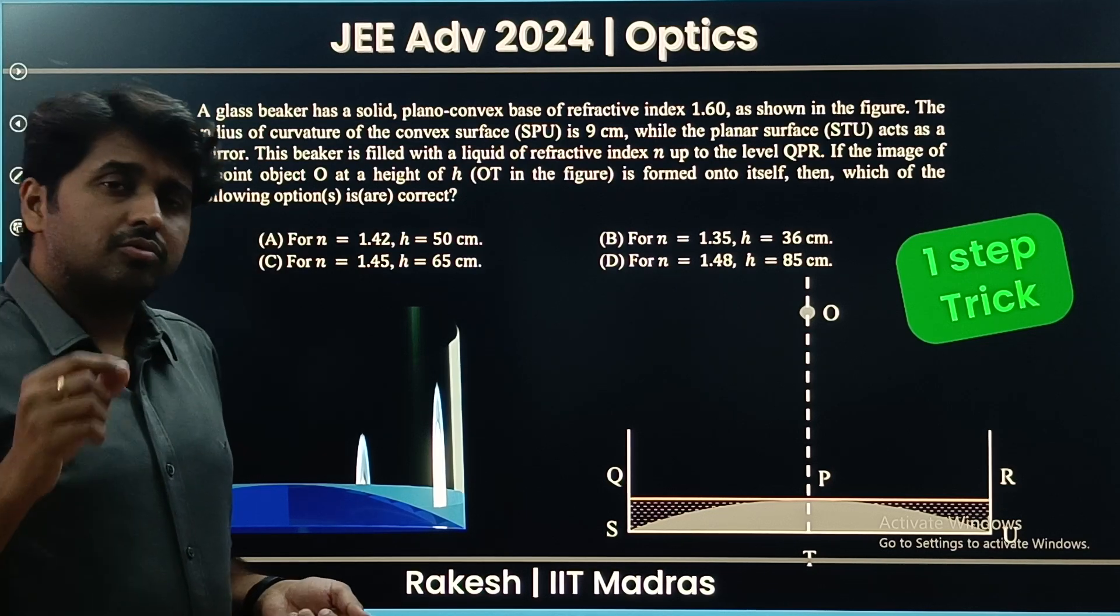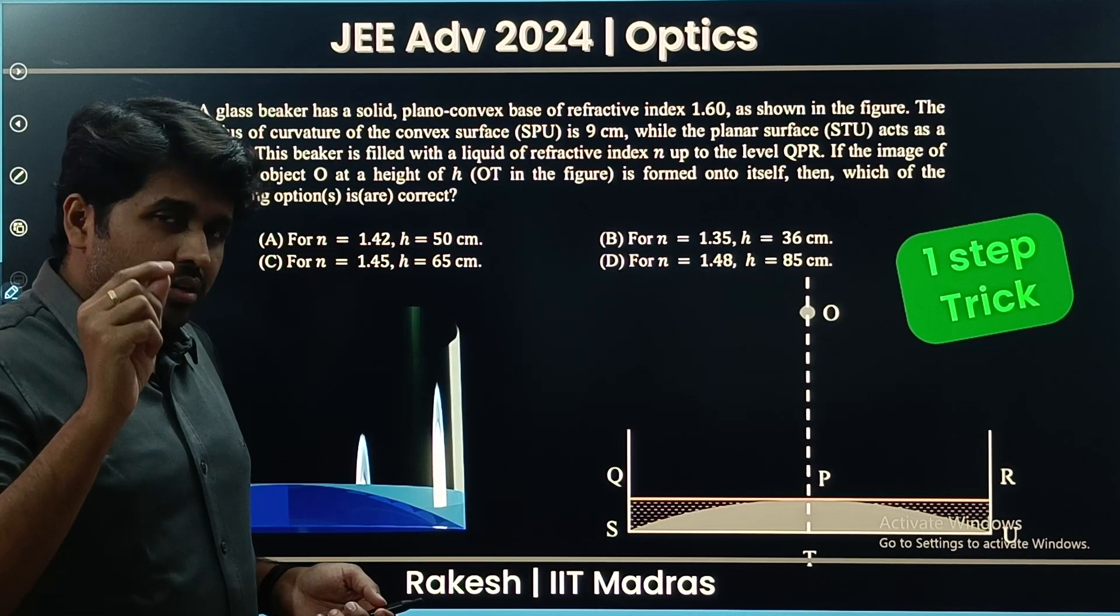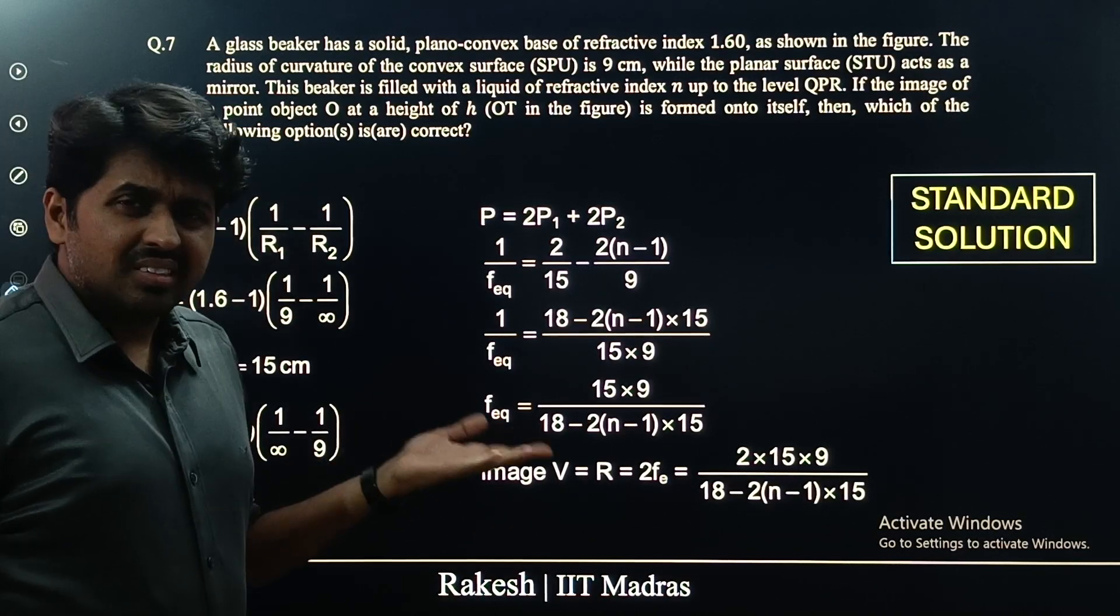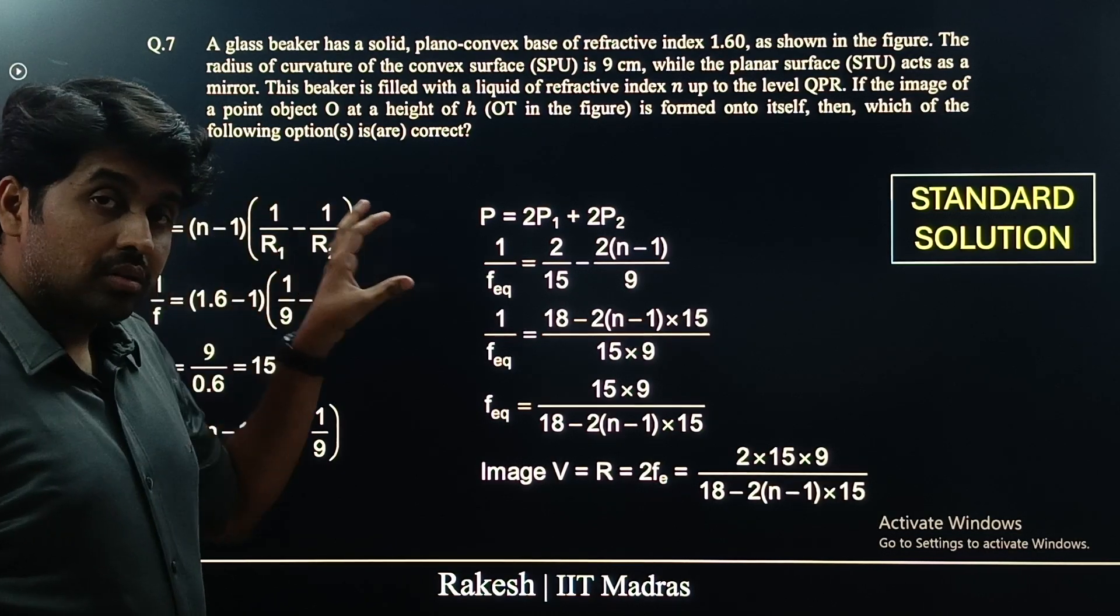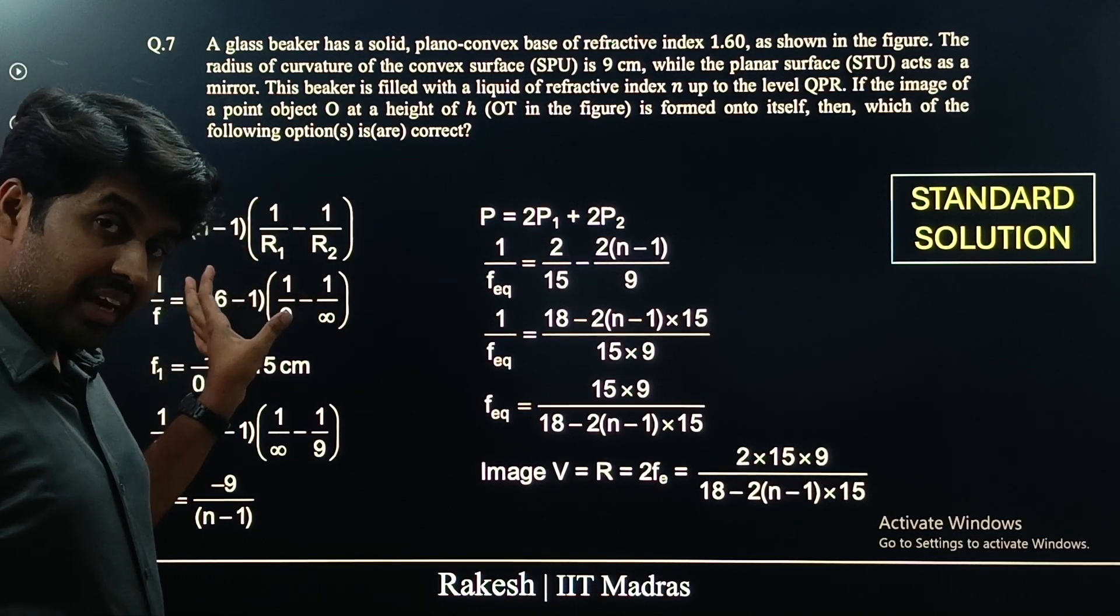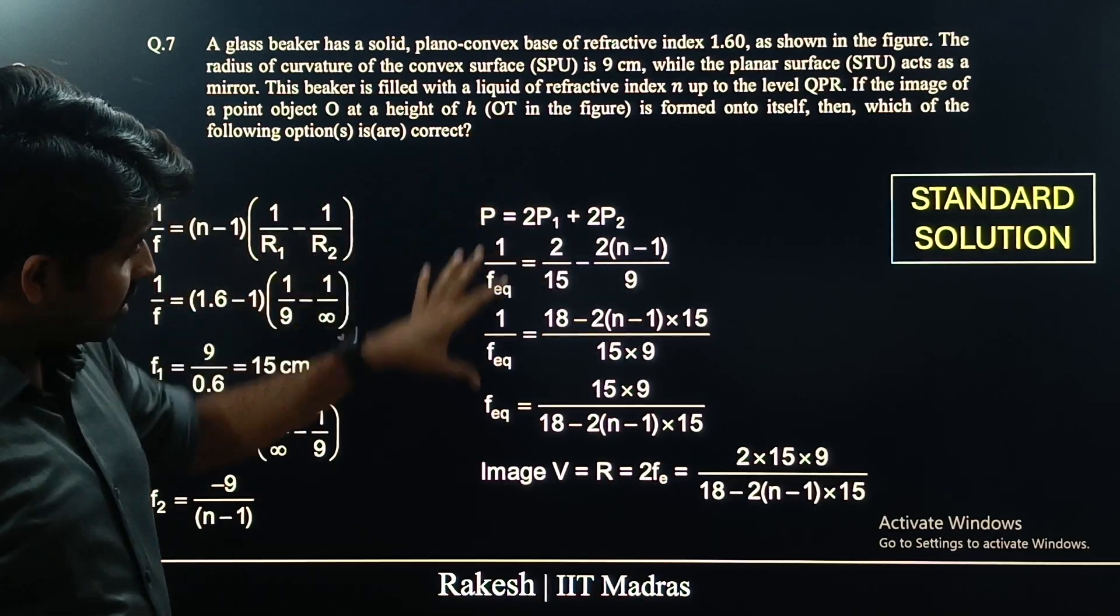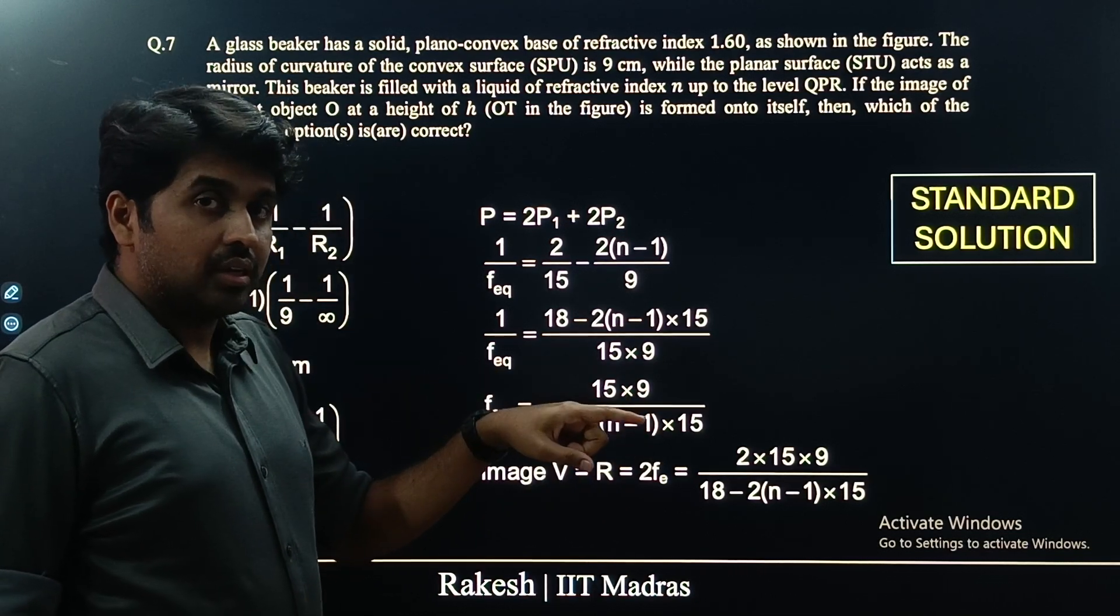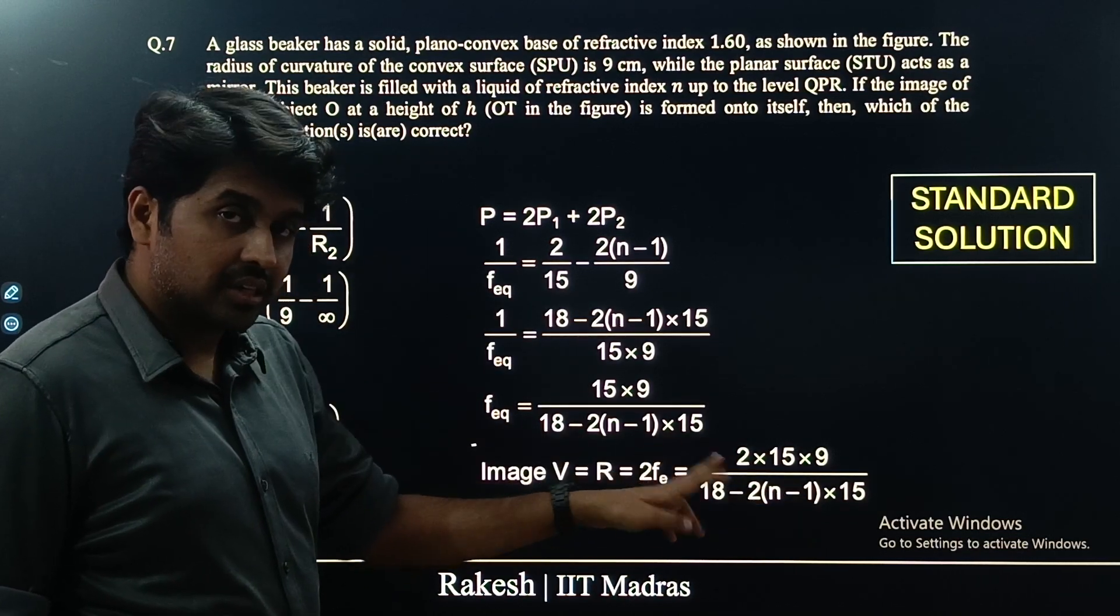Let us go for two solutions. The first is a standard solution and the second one is the awesome solution. In the standard solution, we take the planoconvex lens, find its focal length, then the planoconcave lens which is formed due to the liquid, find its focal length, add the powers, and then the object must be placed at the radius of curvature of the combined mirror. That is what has been done here and we get the relation between h and n.